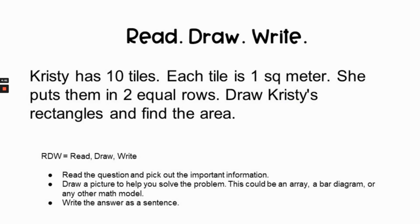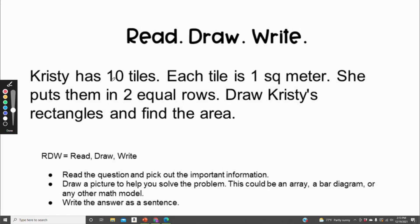Now it's time for the redraw-write question. Christy has ten tiles; each tile is one square meter. She puts them in two equal rows. Draw Christy's rectangle and find the area. You can pause the video, do your work, and then compare your answer to the answer in the description box below. Do your very best and I'll see you in the next lesson.